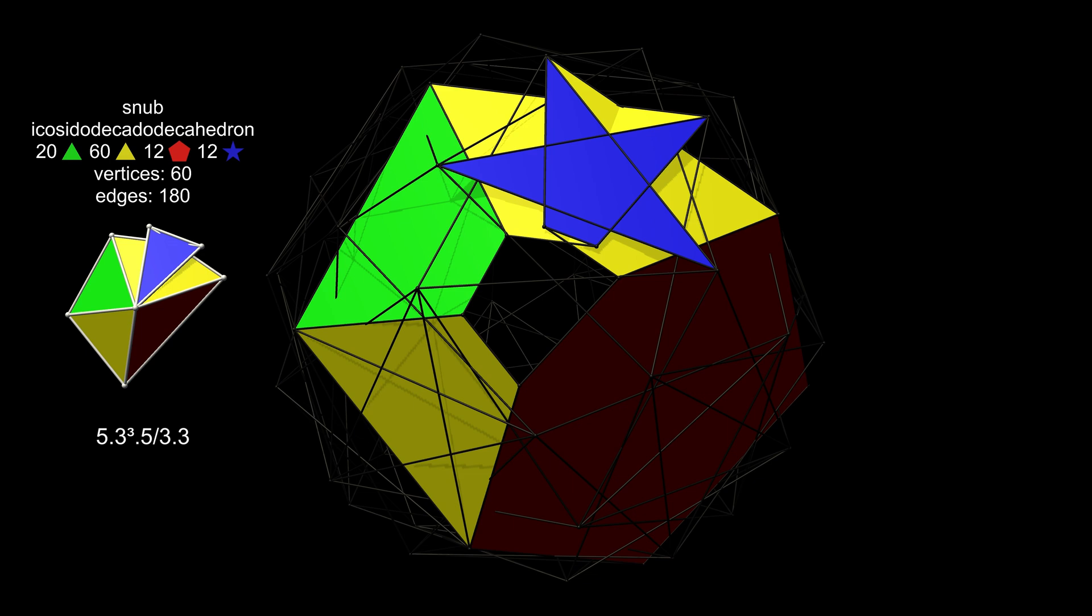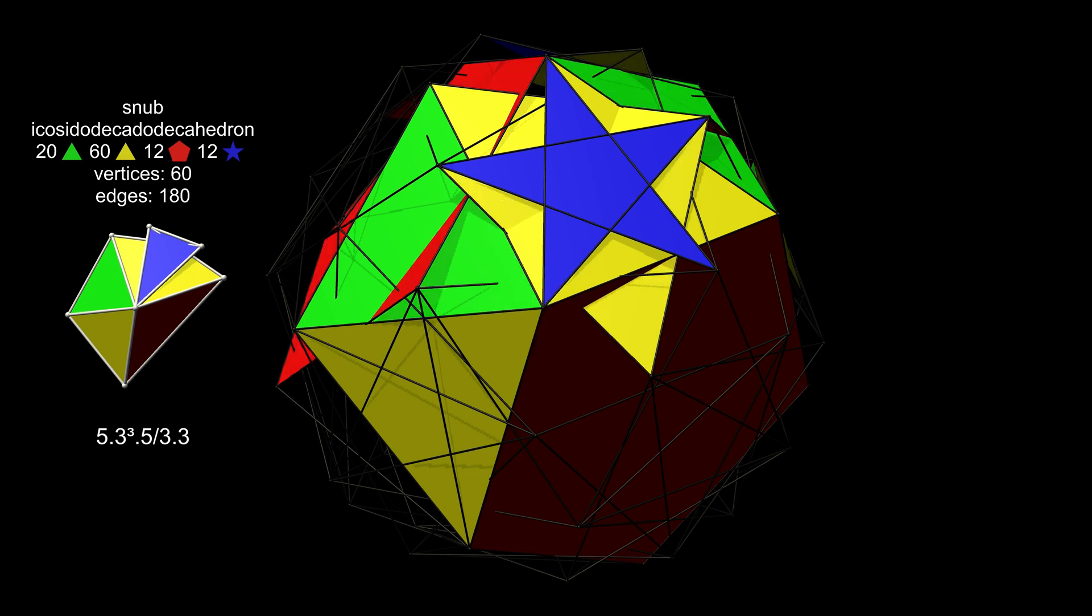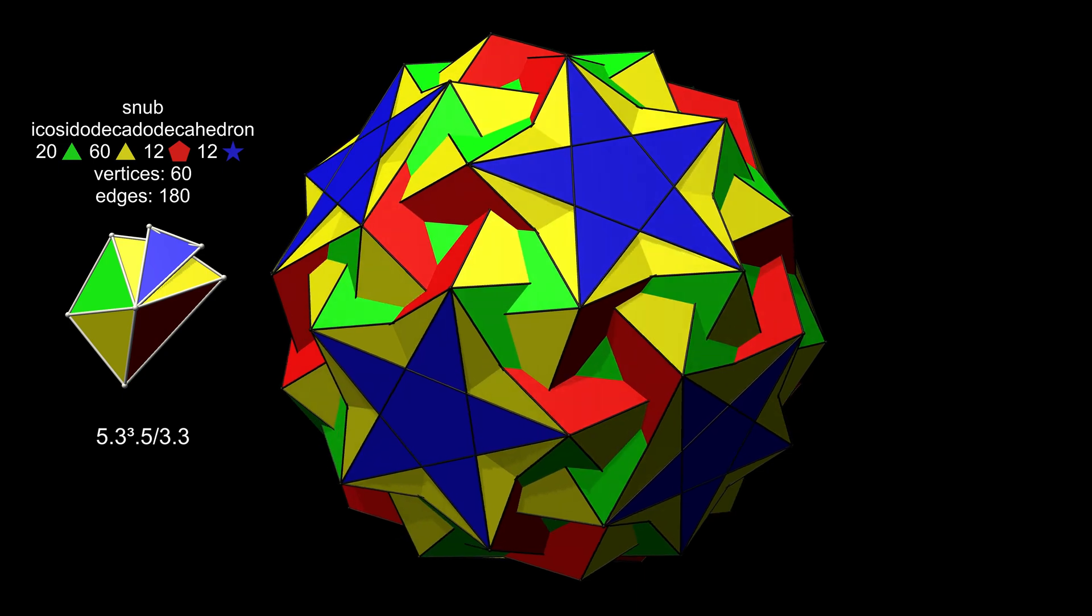It has triangle pentagram pentagon in clockwise order. In practice, this means the polyhedron as a whole is chiral. Its mirror reflection has the same faces, but in anti-clockwise order.